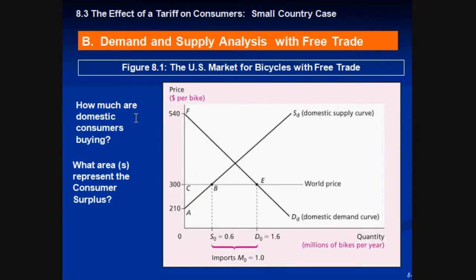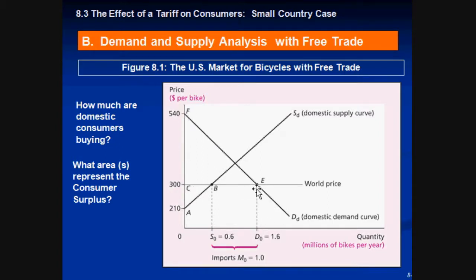Now let's analyze how the consumer gains or loses — mostly loses. In the same setup, domestic consumers are buying 1.6 million units while producers are only producing 0.6 million, so the difference of 1 million is made up by imports. Consumer surplus is the area below the demand curve and above the price line, which is represented by areas F, C, and E — a large amount of surplus.